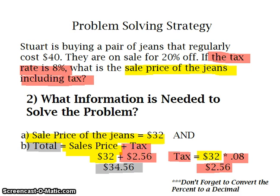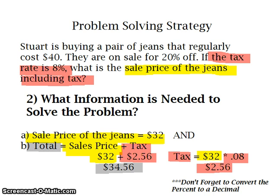To find the tax, I am going to multiply 32 times .08. If you notice in the problem, it says 8%. Again, whenever you are solving problems, it is imperative — very important — that you convert percentages into decimals. In order to convert 8% to a decimal, I am going to drop the percent sign and move my decimal point two places to the left. When I do that, I will have .08.